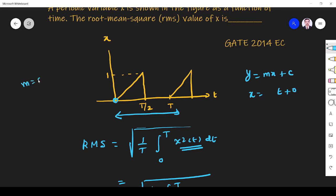And m is the slope. Slope is nothing but dy by dx, change in y. Change in y is, when I go - x changes from 0 to t by 2. So when x changes from 0 to t by 2, y changes from 0 to 1. So it is 2 by t. So x is equal to 2 by t into t. This is the equation.